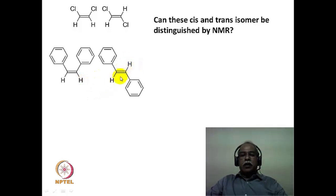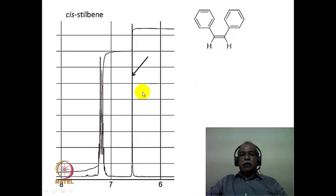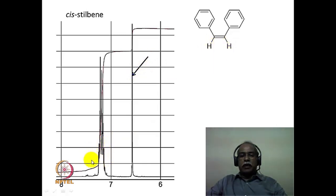Similarly, in the trans isomer these two hydrogens are also chemically and magnetically equivalent, so they also appear only as a singlet. This is the spectrum of cis stilbene. The singlet indicated by the arrow corresponds to these two olefinic hydrogens. The phenyl groups appear as a multiplet of 10 hydrogen intensity, and the two olefinic hydrogens come as a singlet. So there is no J value to distinguish this cis isomer from the trans isomer.